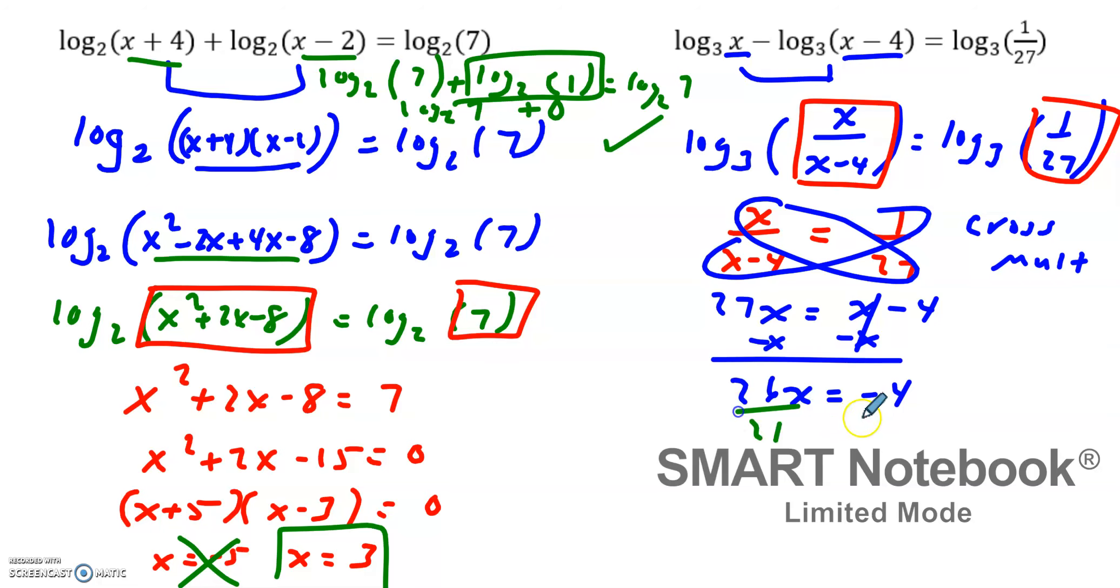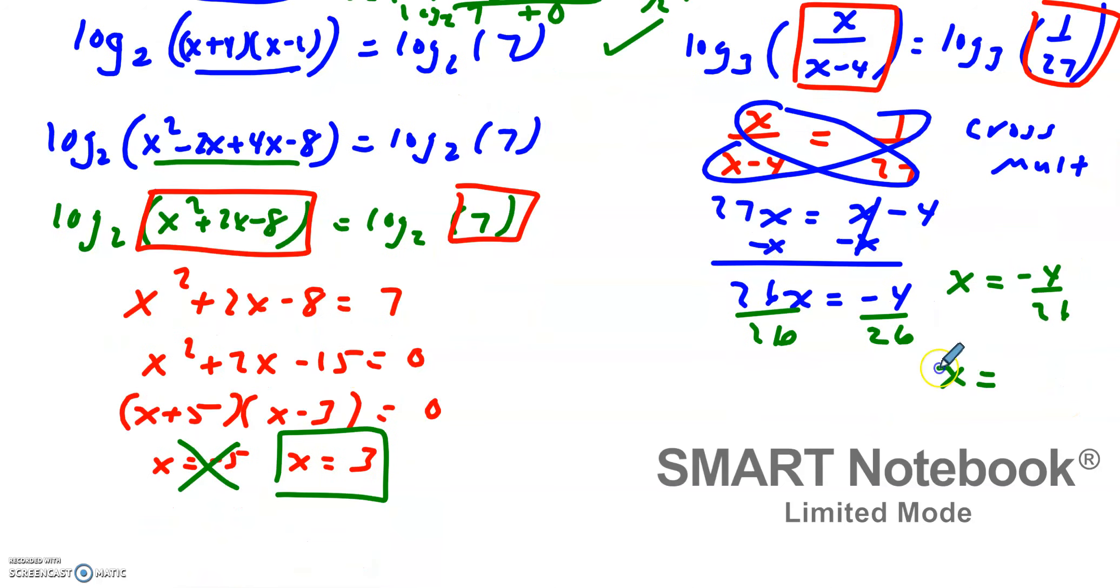Divide both sides by 26. So that means x would be negative 4 over 26. But the better answer with that being reduced would be x equals negative 2 over 13.